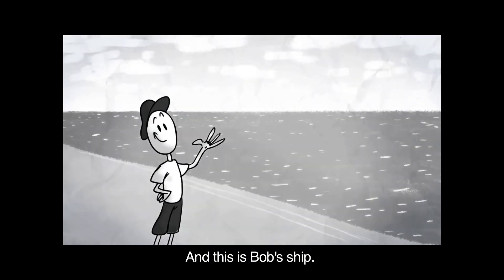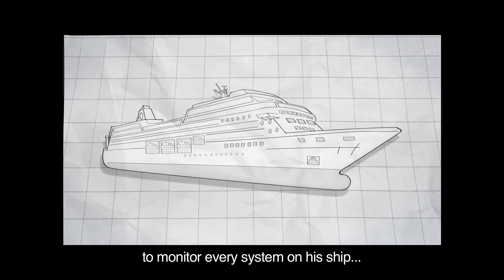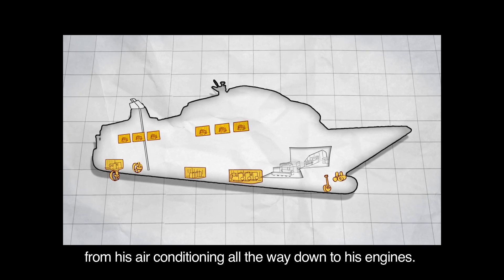This is Bob, and this is Bob's ship. Bob trusts CAT Asset Intelligence to monitor every system on his ship, from his air conditioning all the way down to his engines.